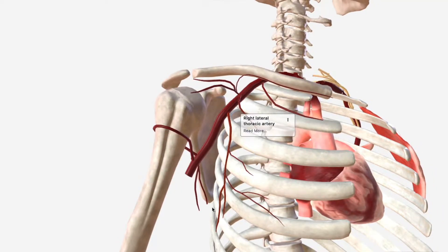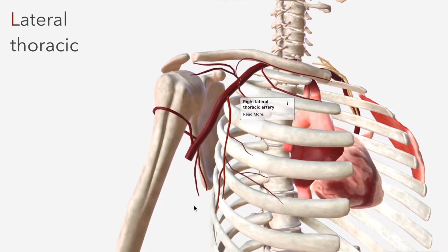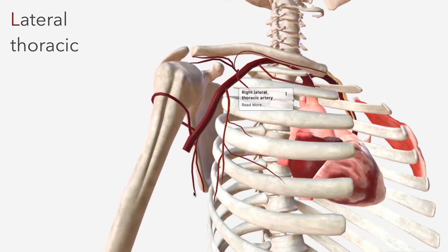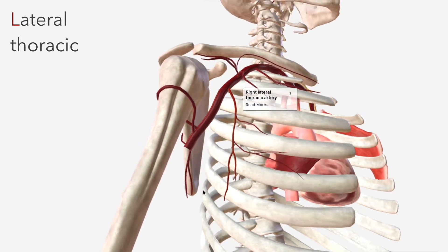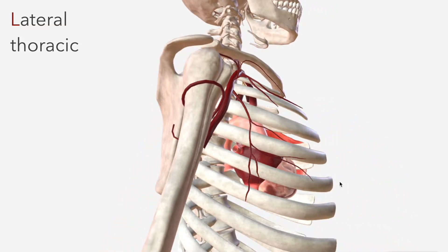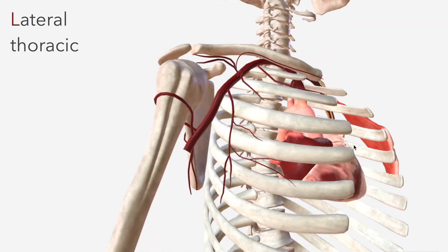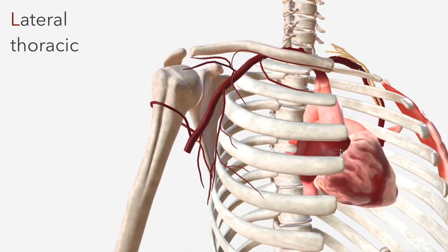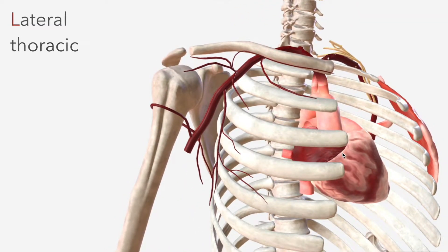Then we have the lateral thoracic artery, which again also contributes to pectoralis major and minor's arterial supply, and then supplies serratus anterior, subscapularis, and the tissue of the female breast. So that's SAL.